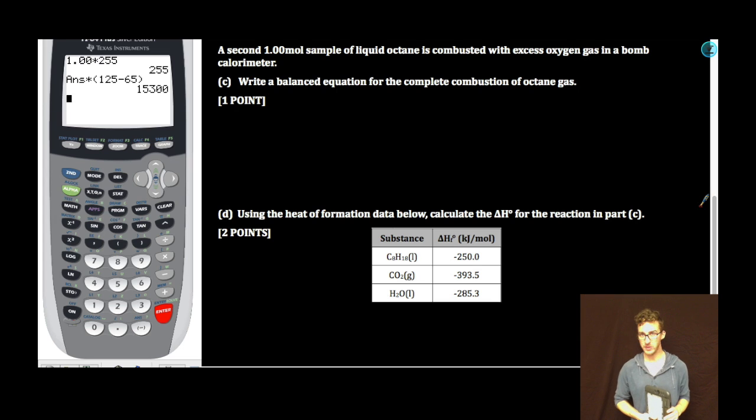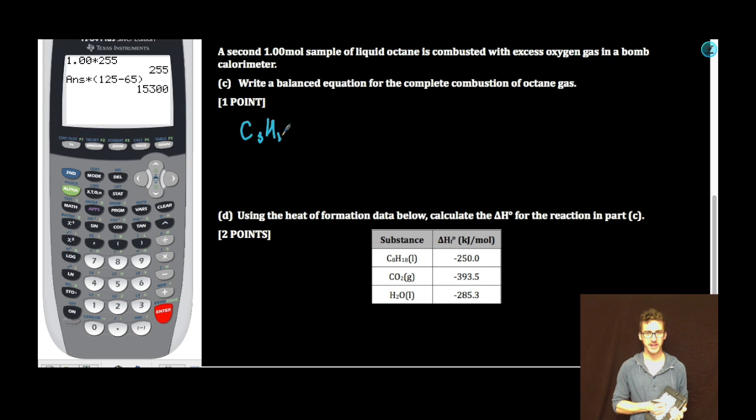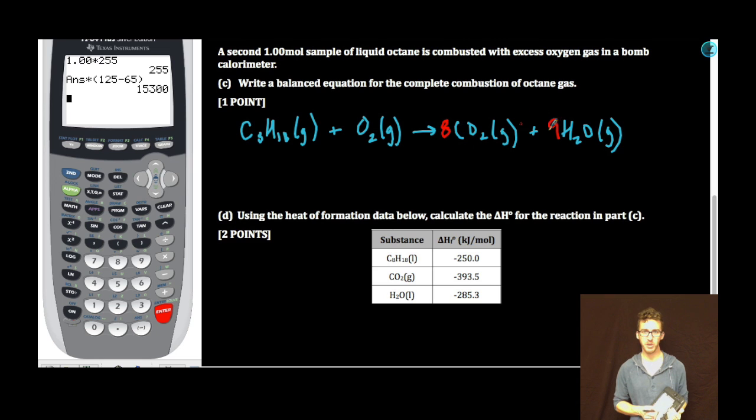A second 1.00 mole sample of liquid octane is combusted with excess oxygen gas in a bomb calorimeter. Part C: Write a balanced equation for the complete combustion of octane gas. C8H18, combustion, which means we need some oxygen producing carbon dioxide gas and water vapor. Remember when balancing combustion equations, balance the carbon first, then balance the hydrogen because it appears only once on either side. Then we get to oxygen. I have a total of 16 plus 9 or 25 oxygen. There's no whole number that I can use to get 25 here, so let's just slip in 12.5. This would balance my equation, although not with whole number coefficients. So then ask yourself, what can I multiply all of my coefficients by so we can get them all into whole numbers? Answer: 2. Balanced, smallest whole number ratio.